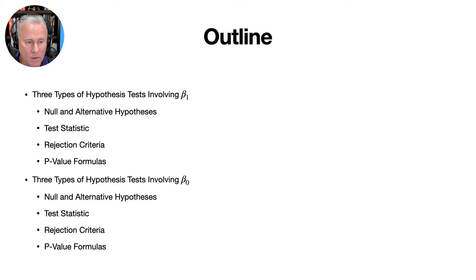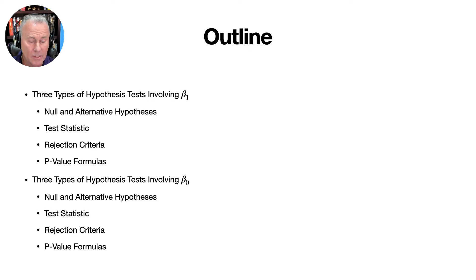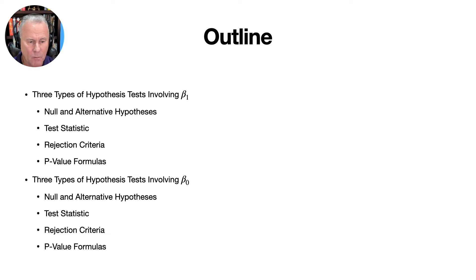Here's an outline of what we'll be looking at in this lecture. We'll start off by looking at three types of hypothesis tests involving beta_1. We'll state the null and alternative hypotheses for each of these three kinds of tests, give the test statistic to use, specify the rejection criterion, and give a p-value formula for each. Then we'll do the same thing for hypothesis tests involving beta_0.